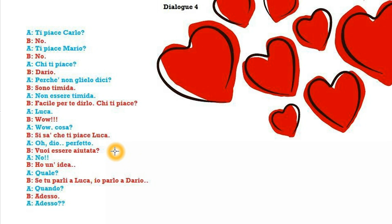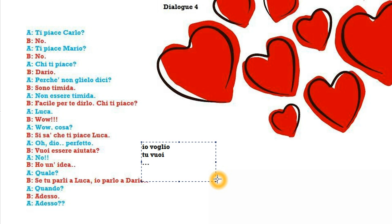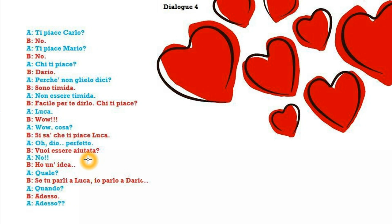Vuoi essere aiutata? In this sentence we revise two things at once. First, the verb volere — to want. Io voglio, tu vuoi — it's very useful and it wants the infinitive form of the verb that comes next. But we also have the passive form here. It's not vuoi aiutare, which would mean do you want to help? It's vuoi essere aiutata — do you want to be helped? So we have the passive: the infinitive of the verb to be, essere, and then the past participle of aiutare, to help.